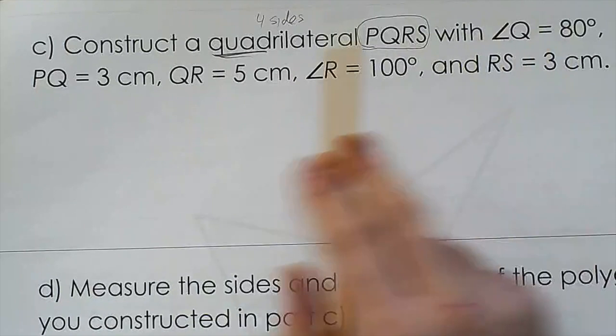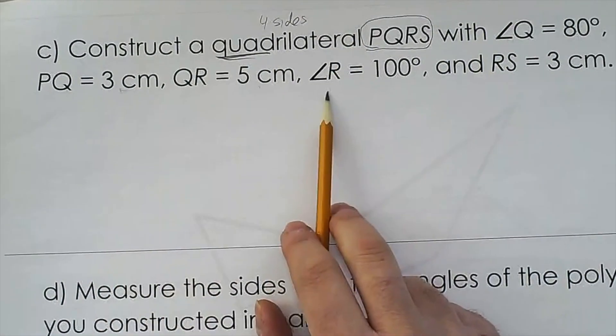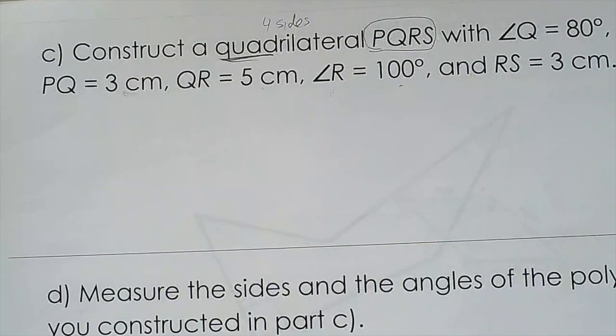With angle Q is 80, PQ 3 centimeters, QR 5 centimeters, angle R is 100, RS is 3 centimeters. Now,